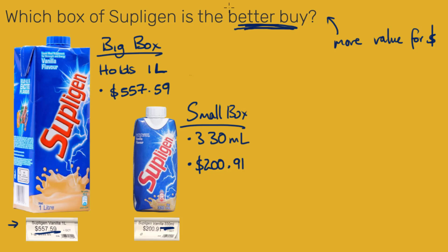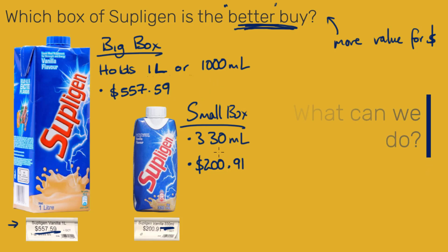I also know that if I'm going to find the better buy, I'll need to compare them in the same units. So I can rewrite this one liter as a thousand milliliters, because a thousand milliliters makes one liter. That way it will be easier to compare the small box to the big box. Those are all of the things that we know.